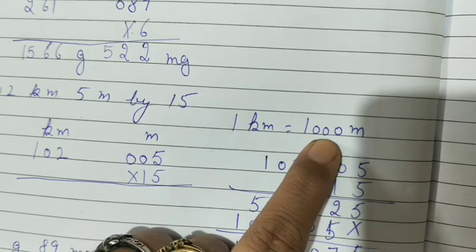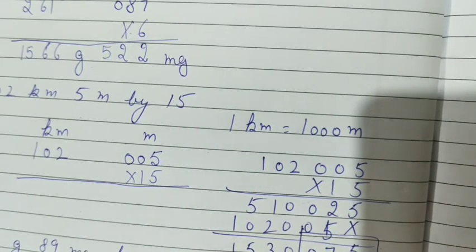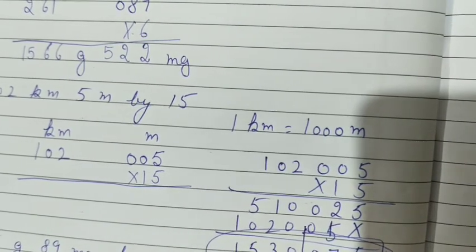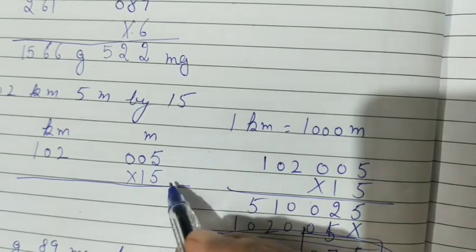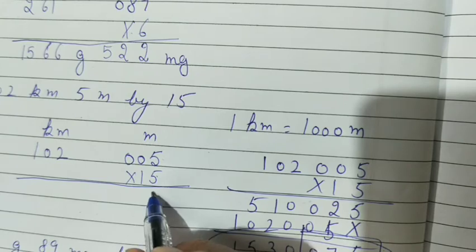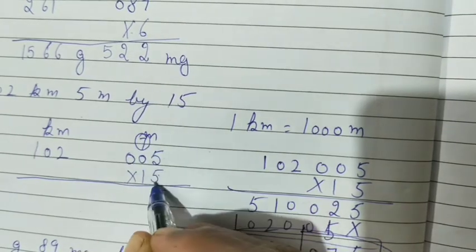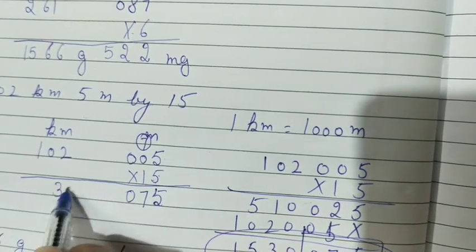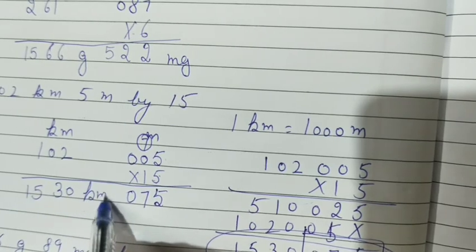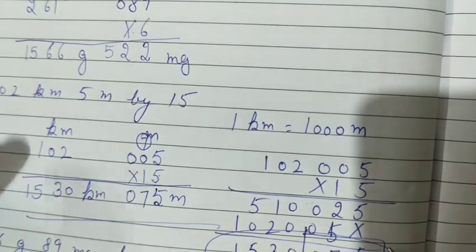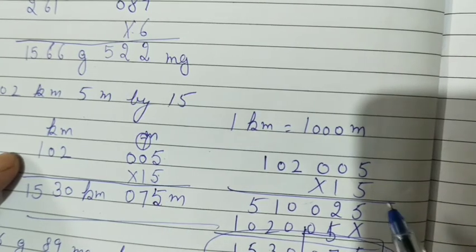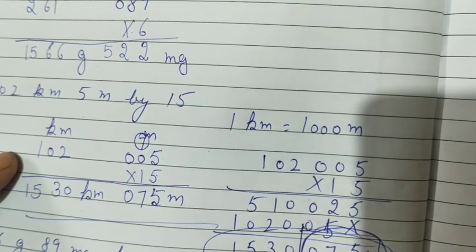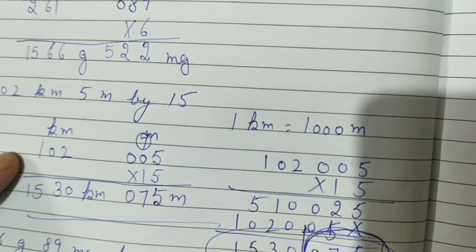So in meter there should be 3 digits, so 3 digits become meter. Answer, this is meter and it will be kilometer. This answer is 1530 kilometer and 75 meter. Or you can directly multiply 15. 5 times 5 is 25, 7 carry over. 15 times 0 is 0 plus 7, 7. 15 times 0 is 0. 15 times 2 is 30. 15 times 1 is 15. If you know table of 15, you can do direct. If you don't know table of 15, first you will multiply by 5, then 1. But you need to know that in meter there will be 3 digits. That will be meter and rest will be the kilometer. Clear?